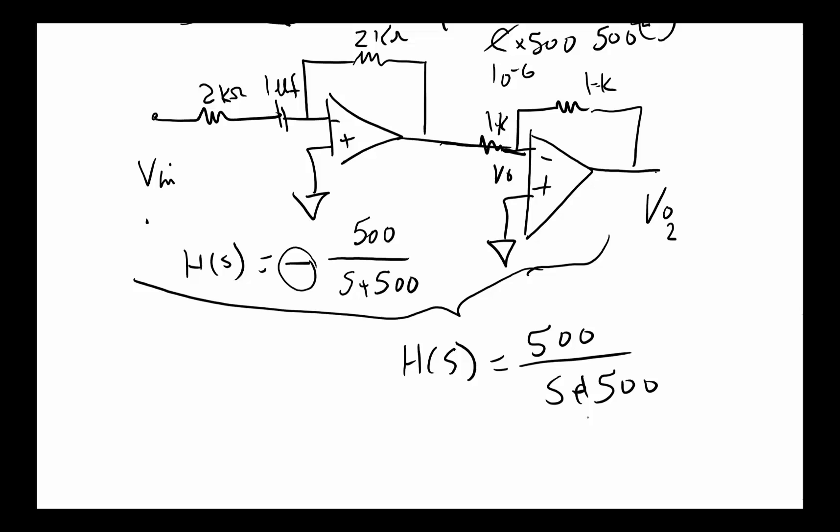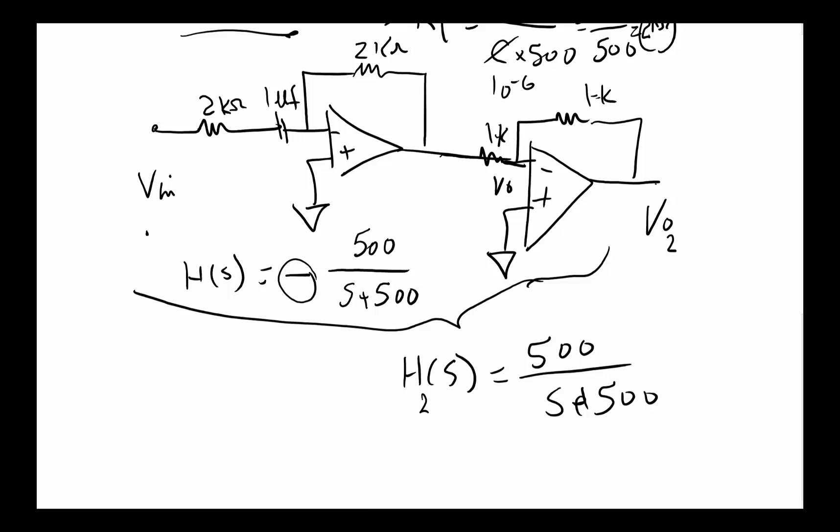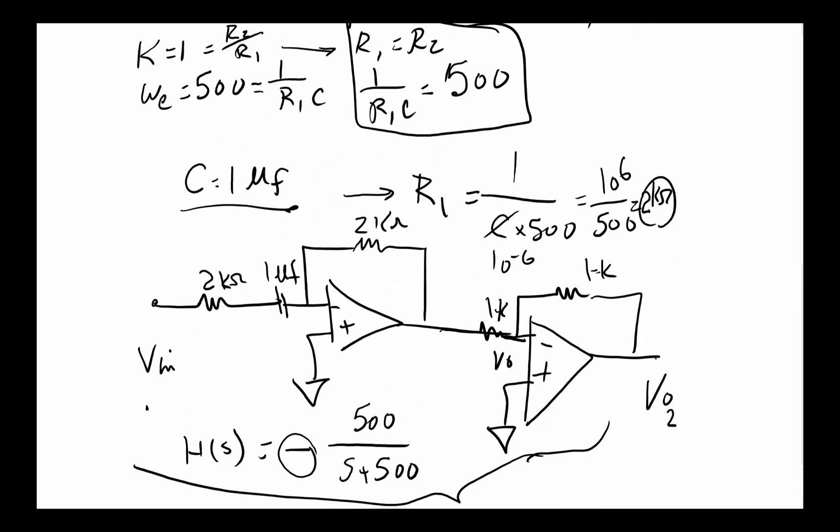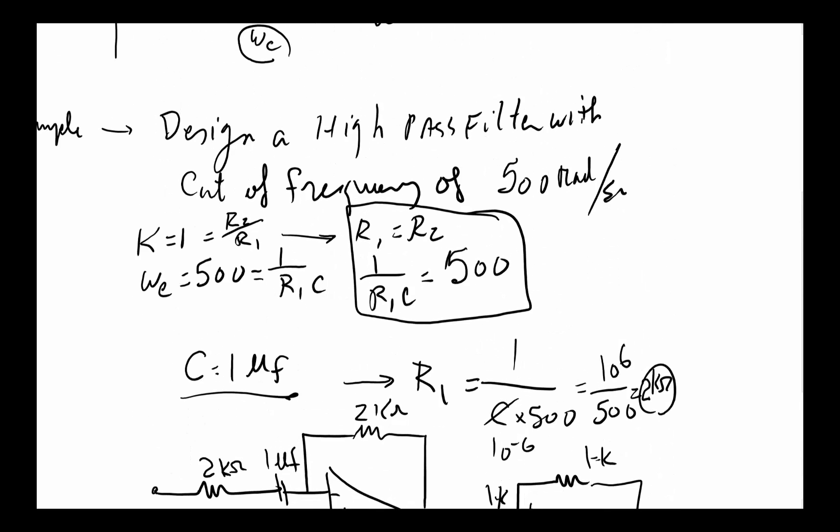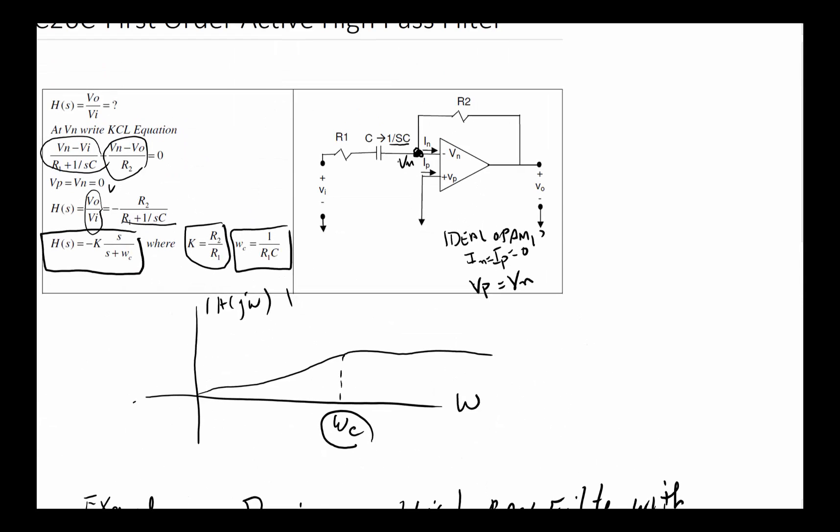Hopefully you see how powerful this is. We can just cascade these to do whatever we want to do with it. We could, for example, change the sign of our output, or go here and change the gain by cascading multiple stages of the amplifier. For this video, we just covered the first-order active high-pass filter.